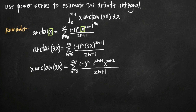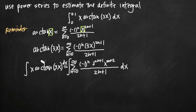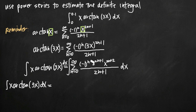Remember we're trying to use this to estimate the value of the definite integral, so our next step is to integrate both sides with respect to x. We'll leave the left-hand side alone and use the right-hand side to estimate the integral. Keep in mind that negative 1 to the n, 3 to the 2n plus 1, and 2n plus 1 in the denominator are all constant coefficients on x to the 2n plus 2 — we're treating n as a constant, so all terms involving n stay where they are.